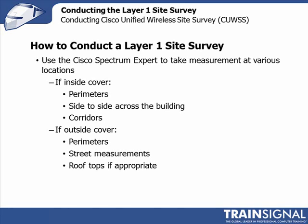If you're in an open space with cubicles and not seeing many interference sources, you might spread out the distance between measurements. The more measurements you take, the more accurate your information and the better your site survey — but you have to balance that against how long it's taking. One popular technique for indoor environments is to walk the perimeters and take measurements periodically, then walk side to side across the building. In a warehouse, walk up and down the aisles; in an office, walk between cubicles or along corridors.